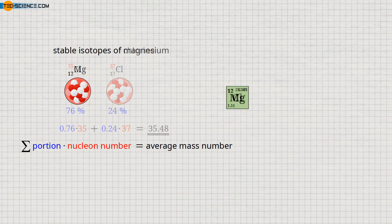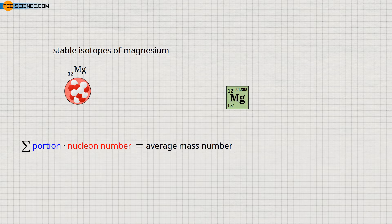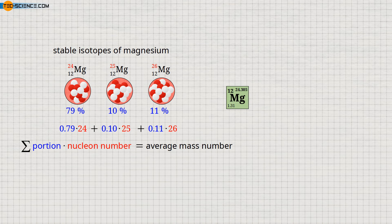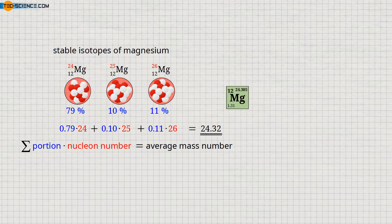Let us consider the element magnesium with atomic number 12, which has 3 stable isotopes. 79% of magnesium atoms have 24 nucleons, 10% have 25 nucleons, and 11% have 26 nucleons. Multiplying each nucleon number by its respective proportion and summing gives an average mass number of 24.32. The deviation from the literature value of 24.305 is again due to rounding of the proportions.